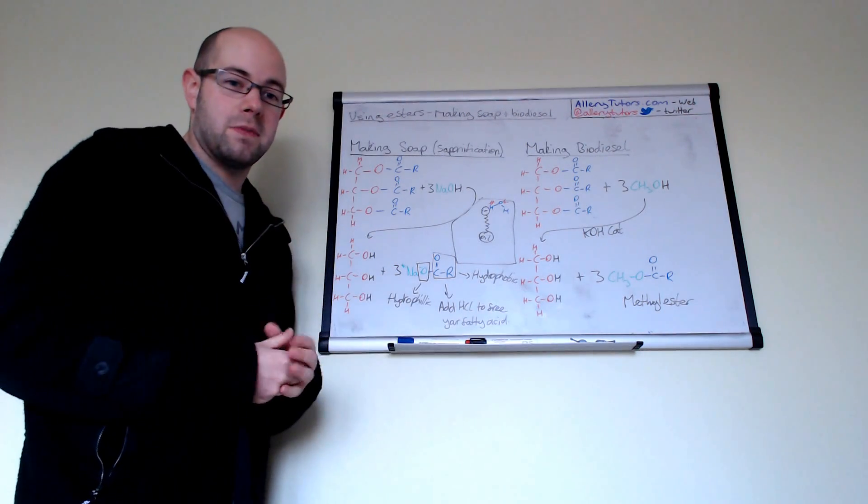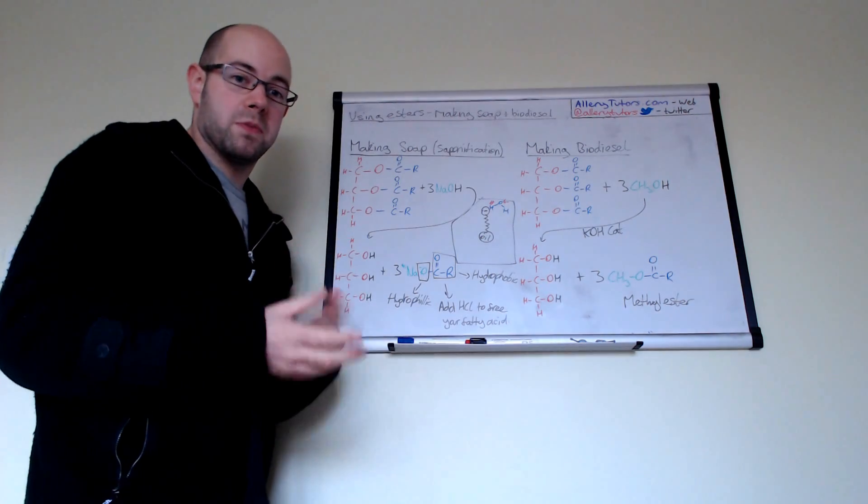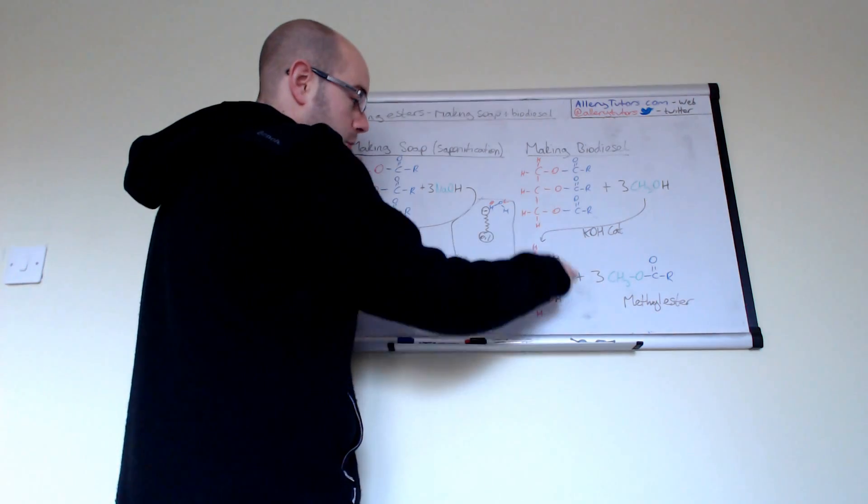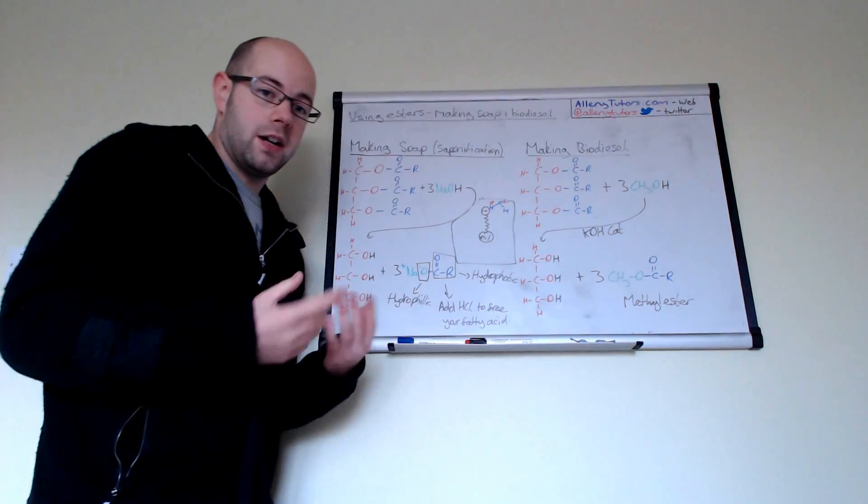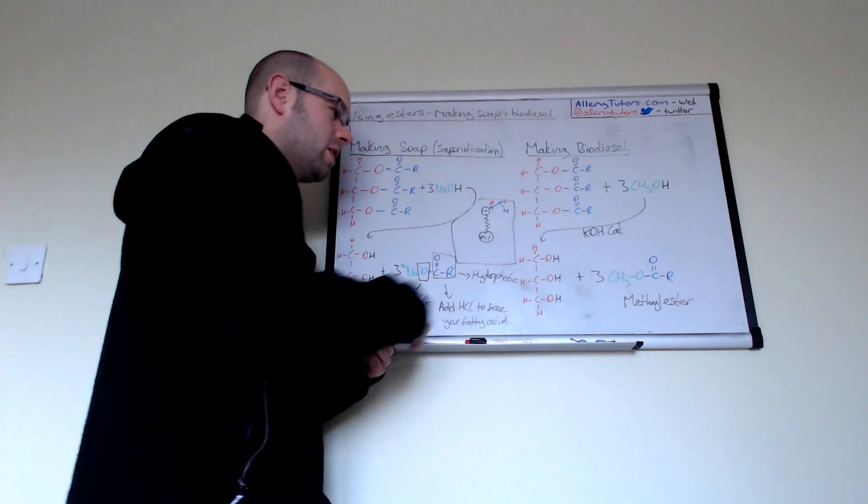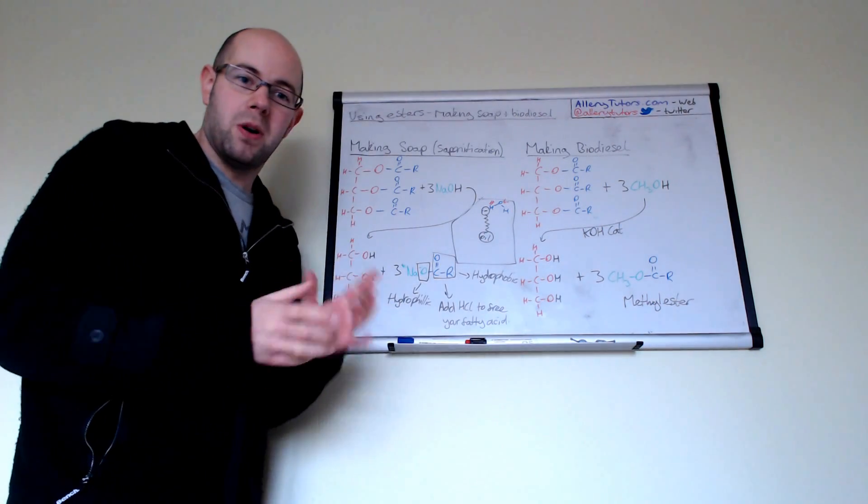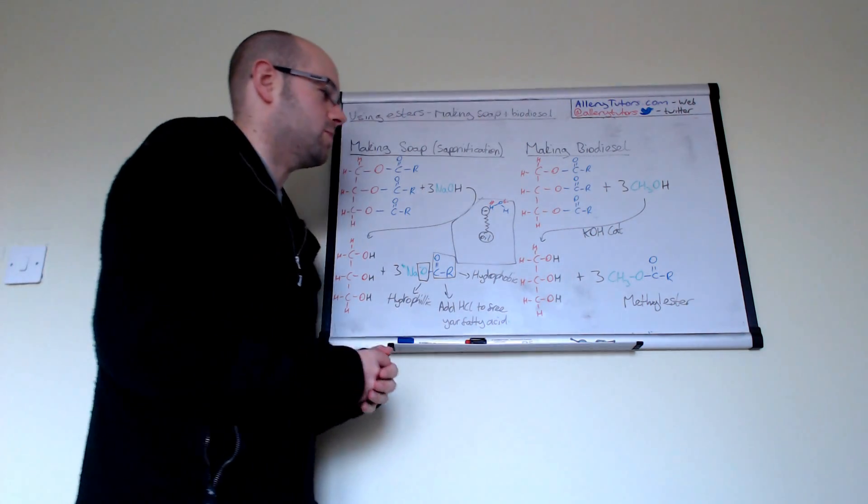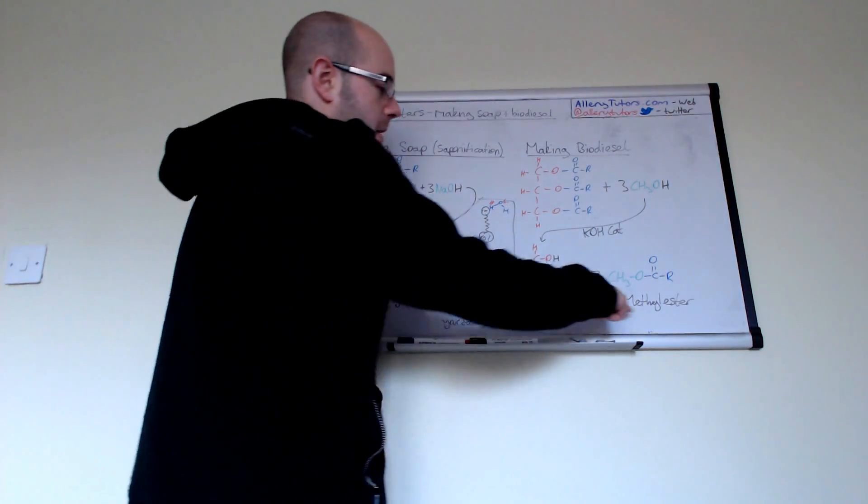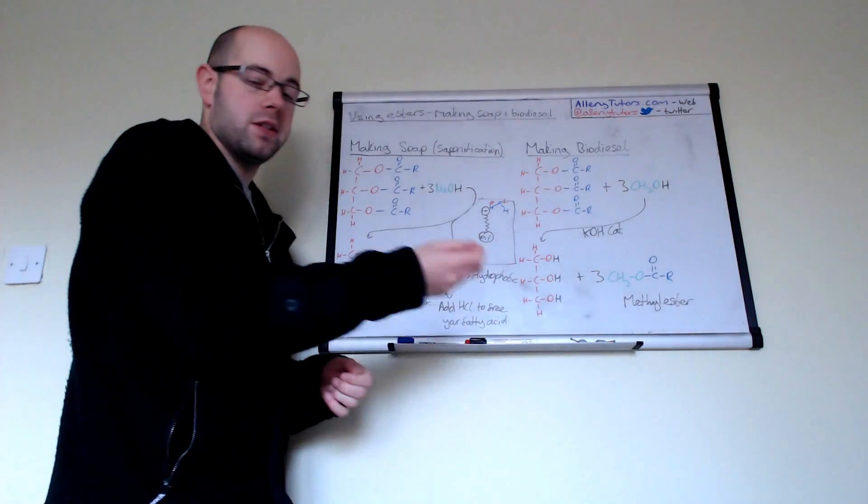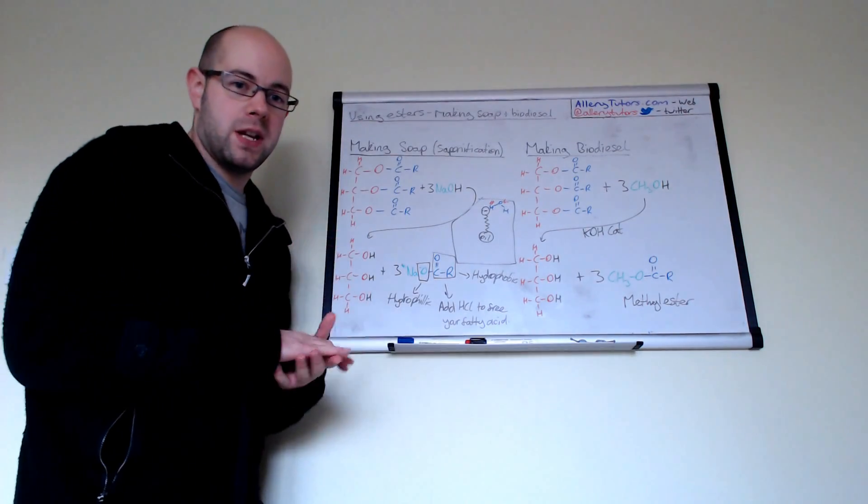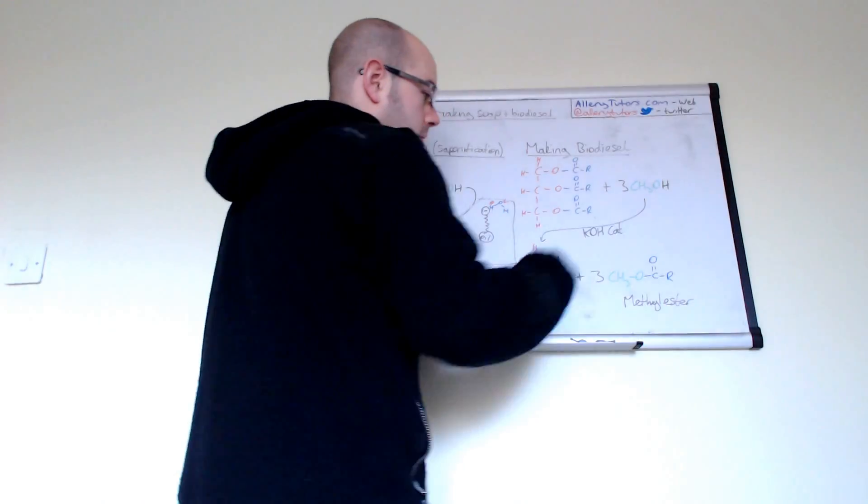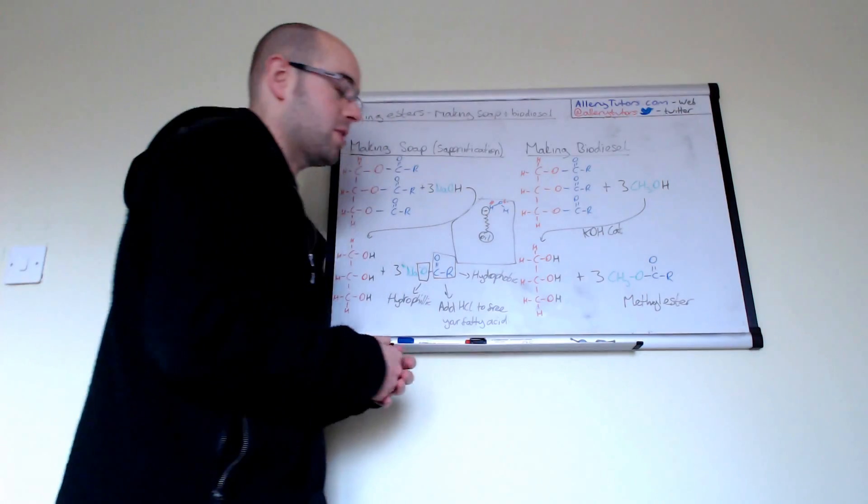With the potassium hydroxide catalyst, you'll form glycerol again. Glycerol can be used in the food industry and cosmetics to keep oils and creams from drying out. You also form a methyl ester. The R group would be a large hydrocarbon, somewhere around C15 to C20 - quite a long chain. Biodiesel is basically just a mixture of methyl esters.